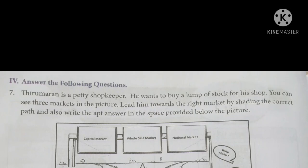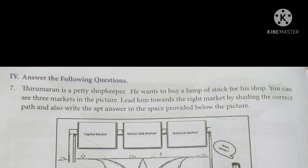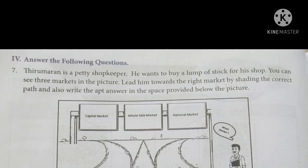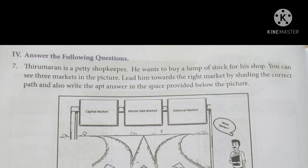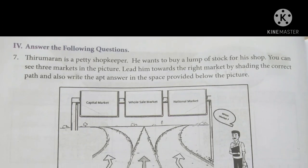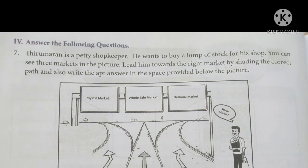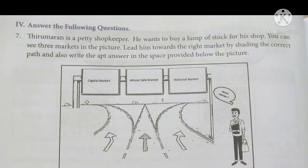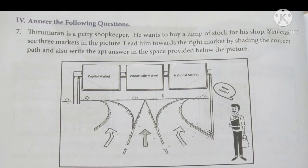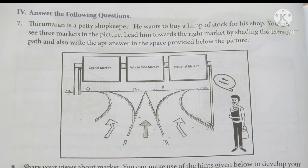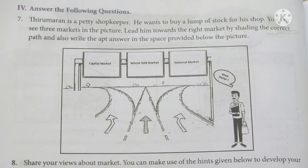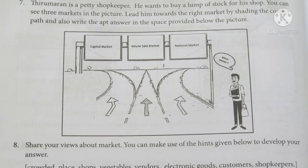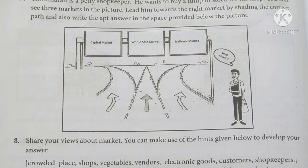Churumaran is a petty shopkeeper who wants to buy a lump of stock for his shop. You can see three markets in the picture. Lead him towards the right market by shading the correct path and write the apt answer in the space provided below the picture. He is a retail shopper, so he wants to buy from the middle market.